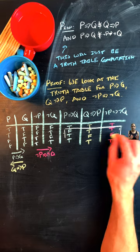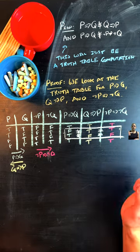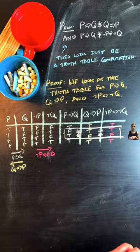At the end of this, you'll find that in the second row and the third row, the converse and the inverse disagree with the original conditional, which is why they're not logically equivalent.